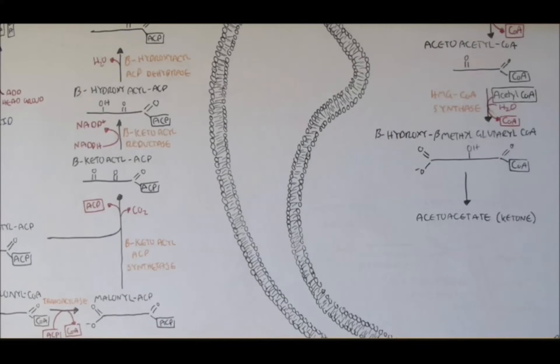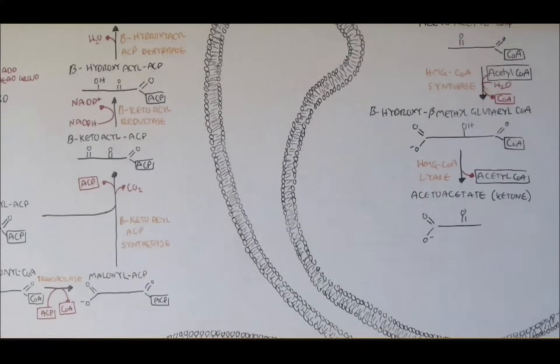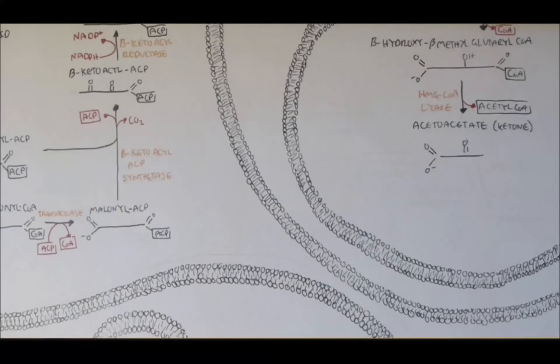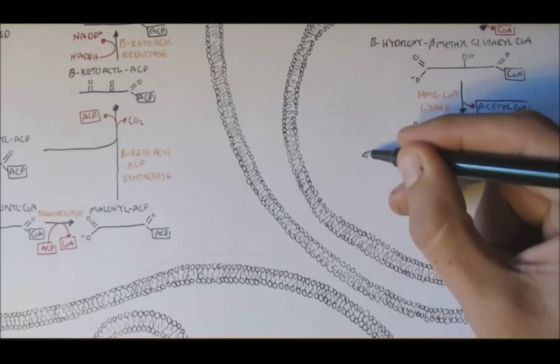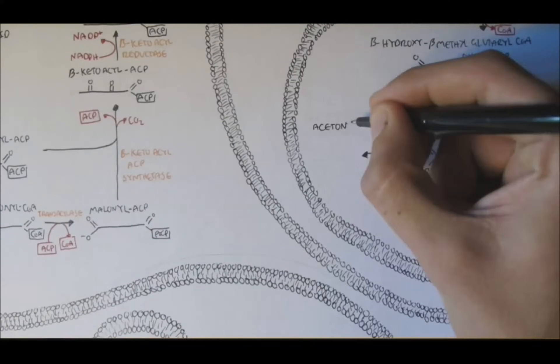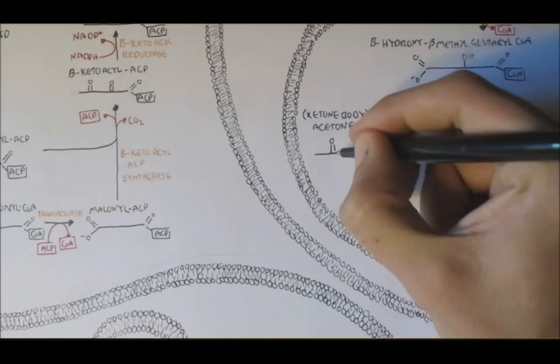Now, beta-hydroxy-beta-methyl-gluteral-CoA can convert to acetoacetate by the enzyme hydroxy-methyl-gluteral-lyase. And acetyl-CoA was removed in this reaction. Now acetoacetate is known as a ketone, but is also a ketone body.